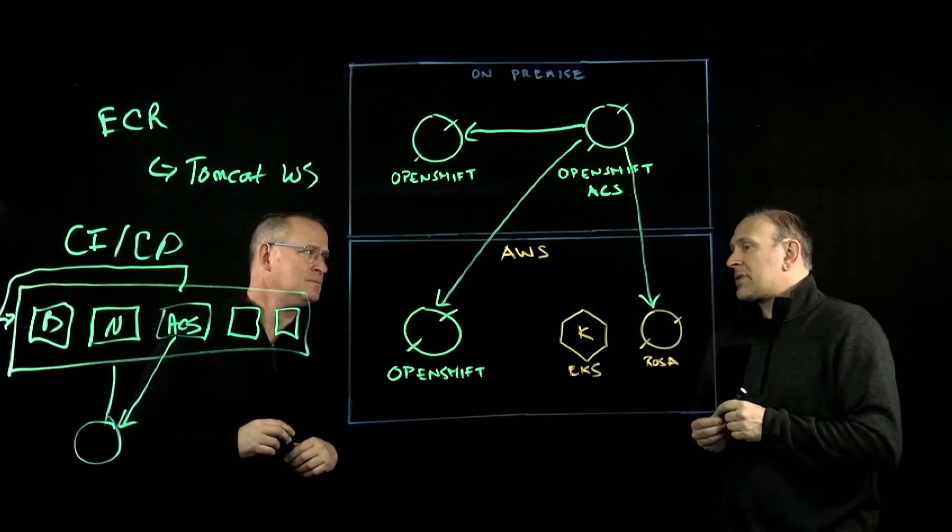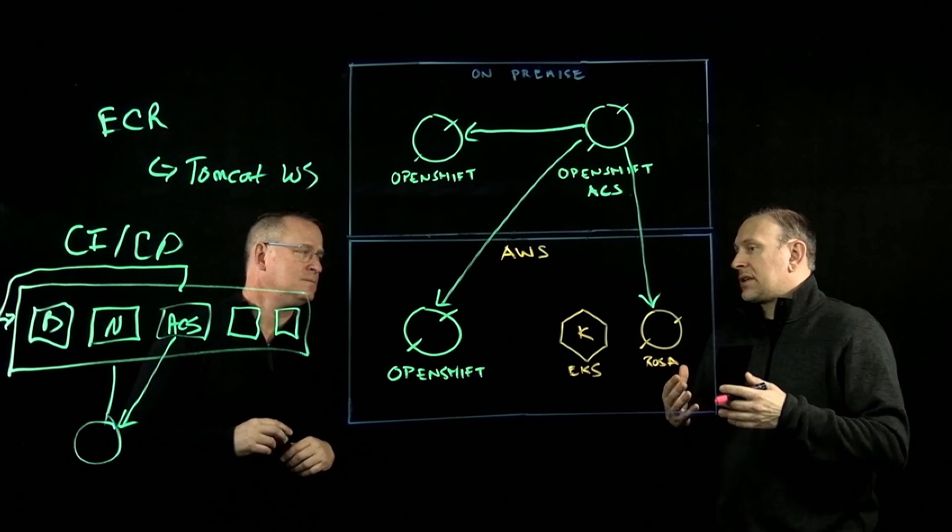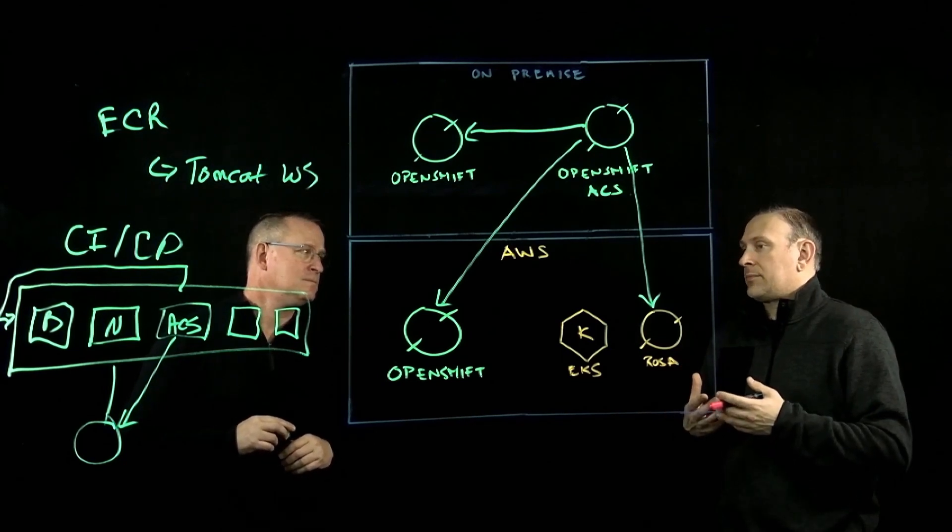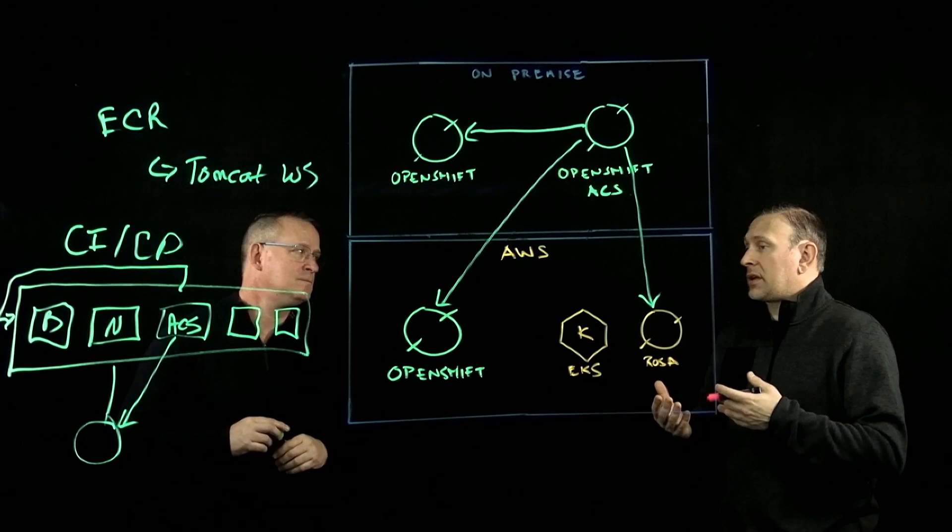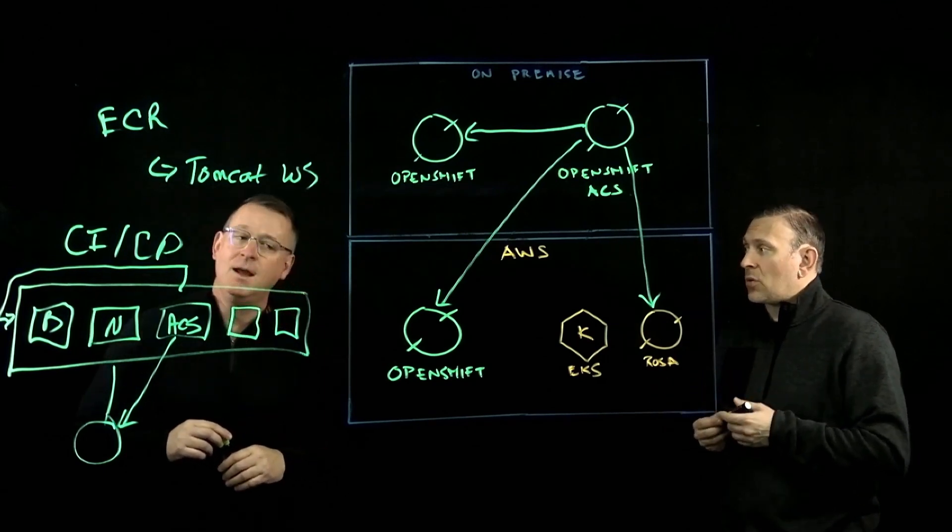What are some of the other benefits that ACS can offer as far as, can ACS plug into like other Kubernetes distributions or only an OpenShift?